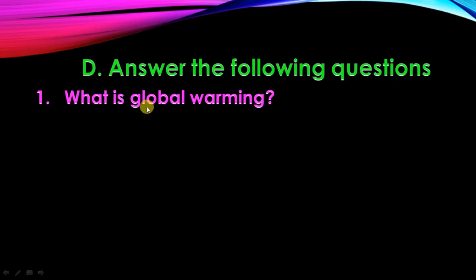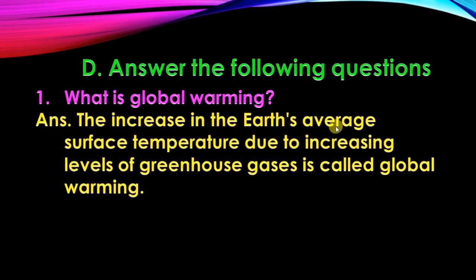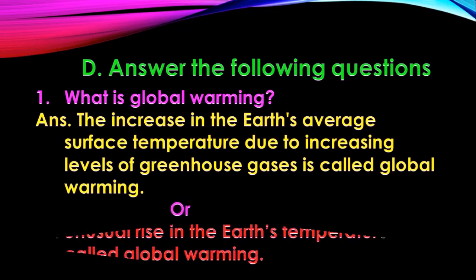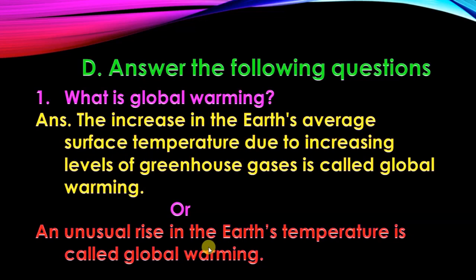D part: answer the following questions. What is global warming? The increase in the earth's average surface temperature due to increasing levels of greenhouse gases — such as carbon dioxide and chlorofluorocarbons — is called global warming. These gases don't allow the sun's heat to go back into space, causing earth's average temperature to rise. A simpler answer: an unusual rise in the earth's temperature is called global warming.